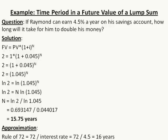So the answer is 15.75 years — it will take about 15.75 years for Raymond to double his money at an interest rate of 4.5% a year. To check the work, you can use the Rule of 72, though it is just an approximation and not as precise as the natural logarithm approach. With the Rule of 72, you take 72 divided by the interest rate, leaving off the percentage sign, so 72 divided by 4.5 equals 16 years.